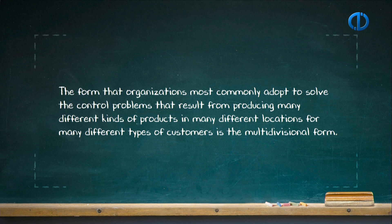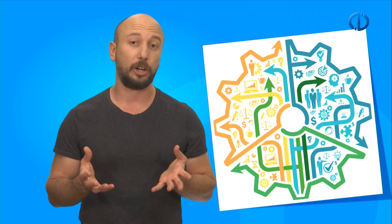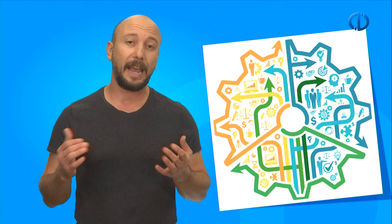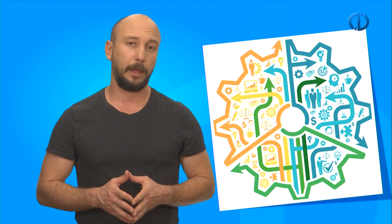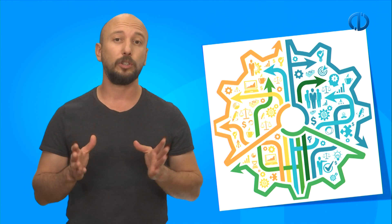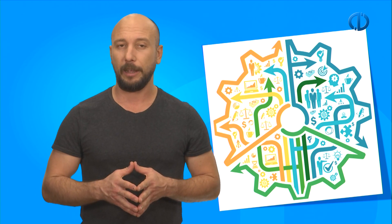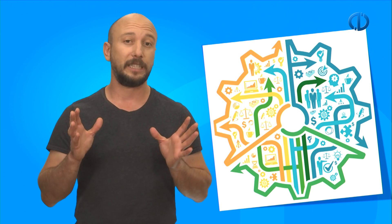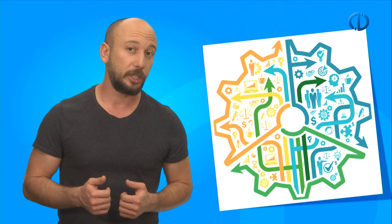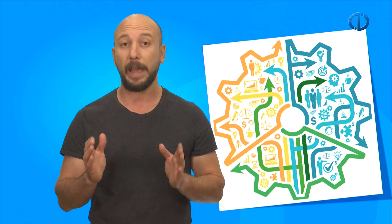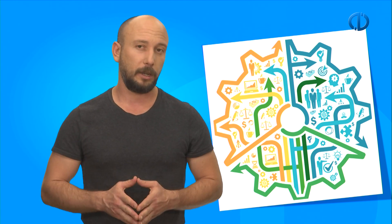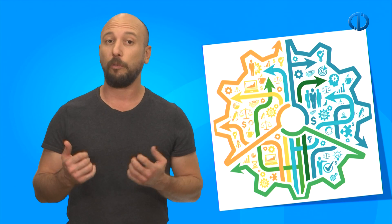Sometimes, an organization's structure needs to be multi-focused in both the function and the product, geography, or customer at the same time. A matrix form enables implementing both divisional and functional forms simultaneously. A matrix form often is the answer when organizations find that the functional, divisional, and geographic structures combined with coordination mechanisms will not work. The matrix is a secure form of coordination.